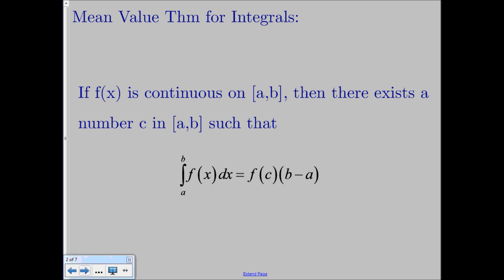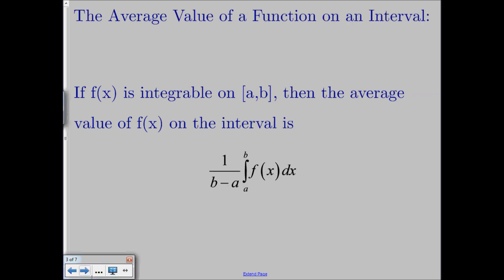This definition leads directly to finding the average value for a function over an interval. It's not the most important thing to know, but it's a nice little theorem to have memorized. What it leads to is the average value of a function on an interval. To find the average value of a function, all you have to do is multiply 1 over b minus a times the integral from a to b of f of x dx, provided the function is integrable on a to b.